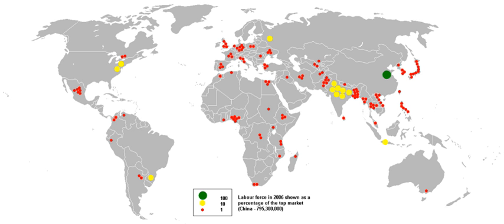A separate category based on nature of employment includes attached agricultural laborers, bonded laborers, migrant workers, contract and casual laborers. Another separate category dedicated to distressed unorganized sector includes toddy tappers, scavengers, carriers of head loads, drivers of animal-driven vehicles, loaders and unloaders.